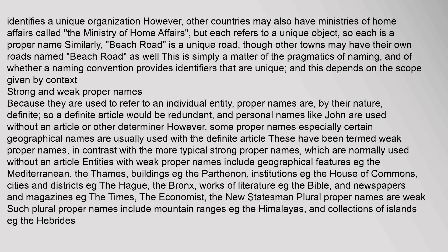Because they are used to refer to an individual entity, proper names are by their nature definite, so a definite article would be redundant, and personal names like John are used without an article or other determiner. However, some proper names — especially certain geographical names — are usually used with the definite article; these have been termed weak proper names, in contrast with the more typical strong proper names. Entities with weak proper names include geographical features, e.g. the Mediterranean, the Thames; buildings, e.g. the Parthenon; institutions, e.g. the House of Commons; cities and districts, e.g. the Hague, the Bronx; works of literature, e.g. the Bible; and newspapers and magazines, e.g. the Times, the Economist, the New Statesman.